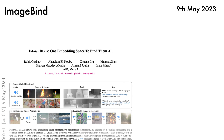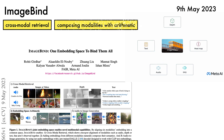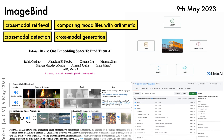Meta AI has released ImageBind, a joint embedding space that aligns six modalities by using various data sources paired with images: namely depth, heat maps, IMU, audio, and text. This allows applications like cross-modal retrieval, composing modalities with arithmetic, cross-modal detection, and cross-modal generation. Code and models are made available under a Creative Commons non-commercial license.